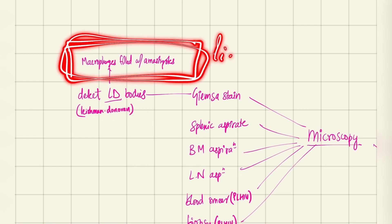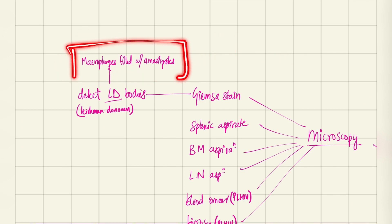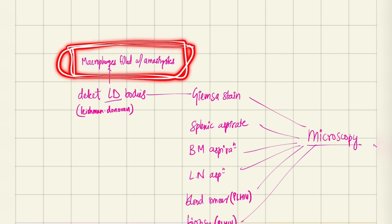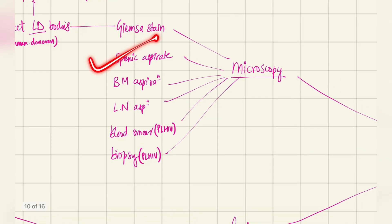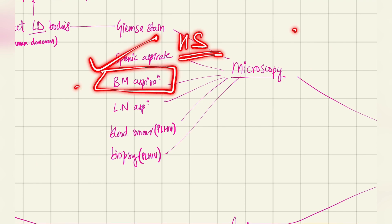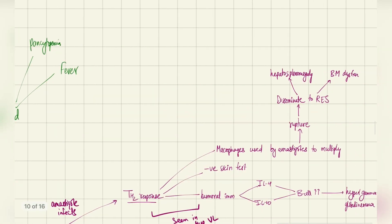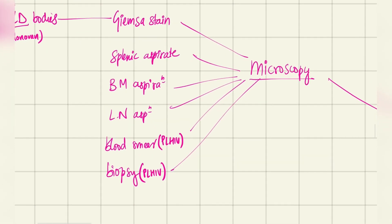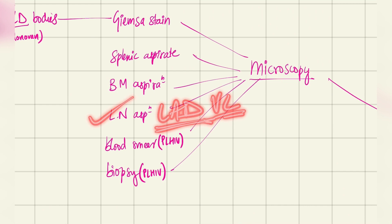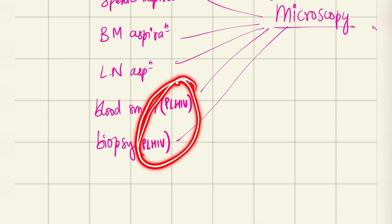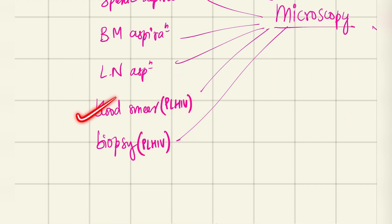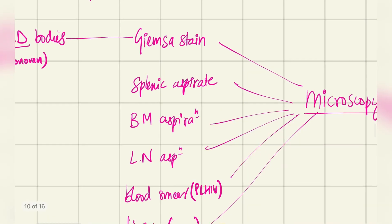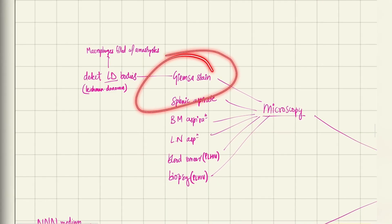For lab diagnosis: in microscopy, one of the most important points is the Giemsa stain, which detects Leishman-Donovan (LD) bodies — macrophages filled with amastigotes. Specimens include splenic aspirate (due to hepatosplenomegaly), bone marrow aspiration (due to bone marrow dysfunction), and lymph node aspiration (due to lymphadenopathy). In people living with HIV (PLHIV), blood smear and biopsy are also performed.